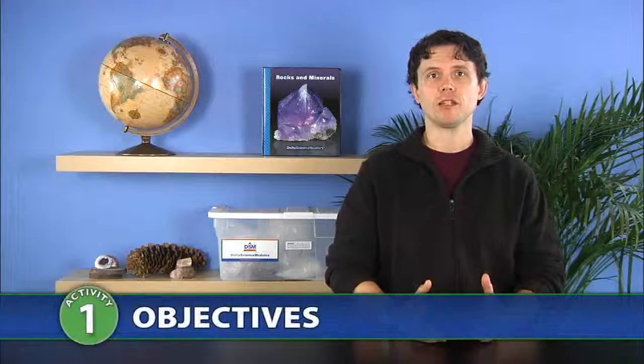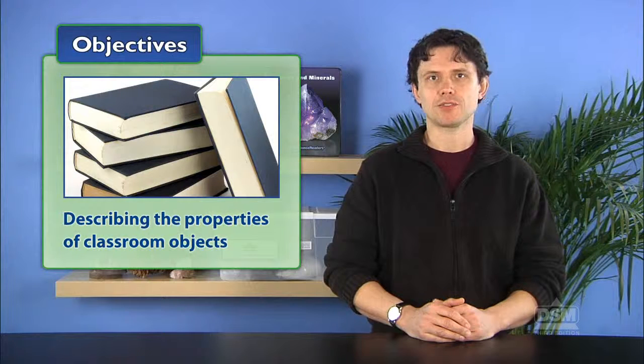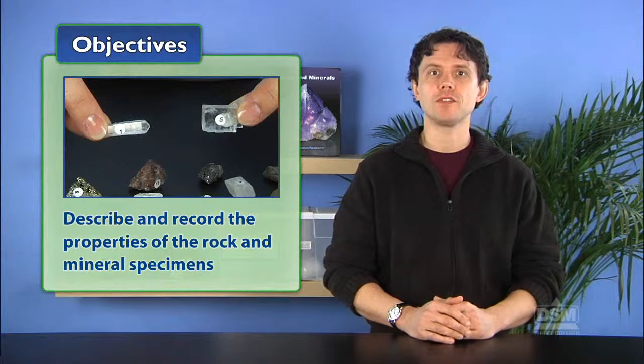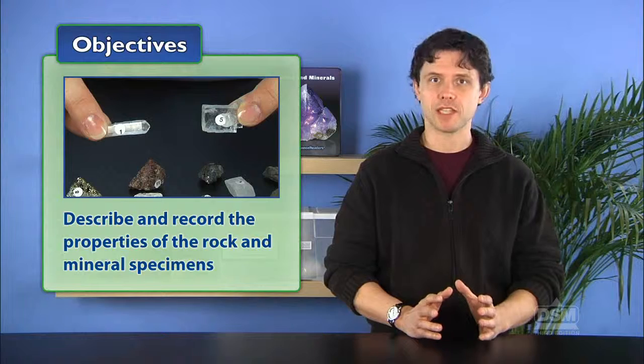In Activity 1, Rock and Mineral Properties, students begin by describing the properties of classroom objects and looking for the combination of words that best describes each object. Students then describe and record the properties of each of the rock and mineral specimens in the kit.